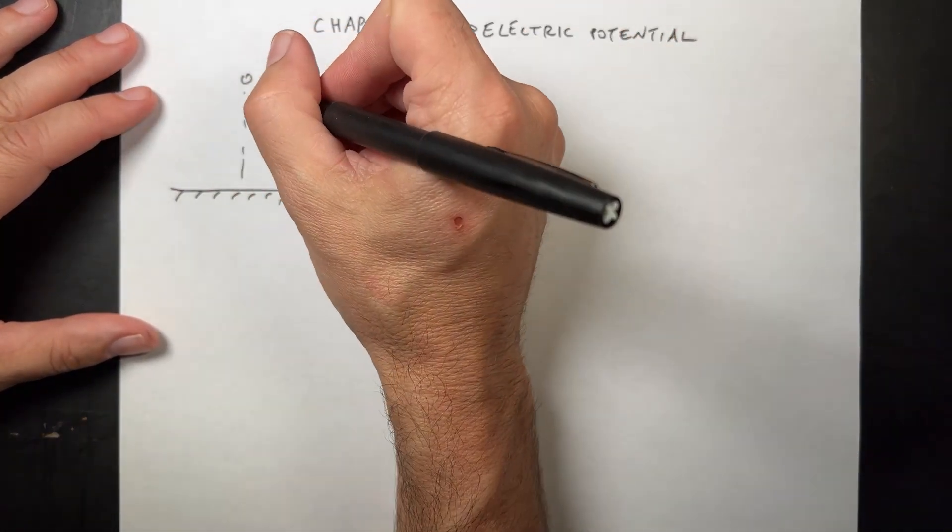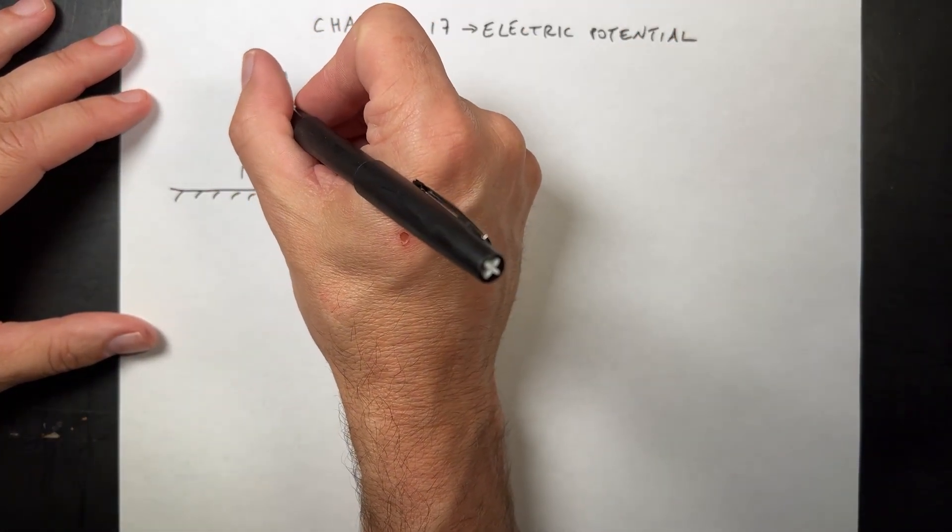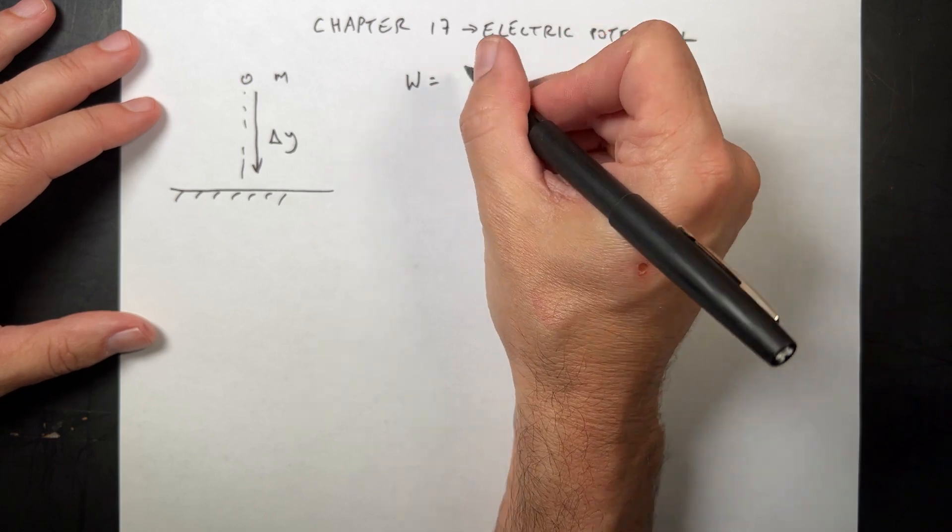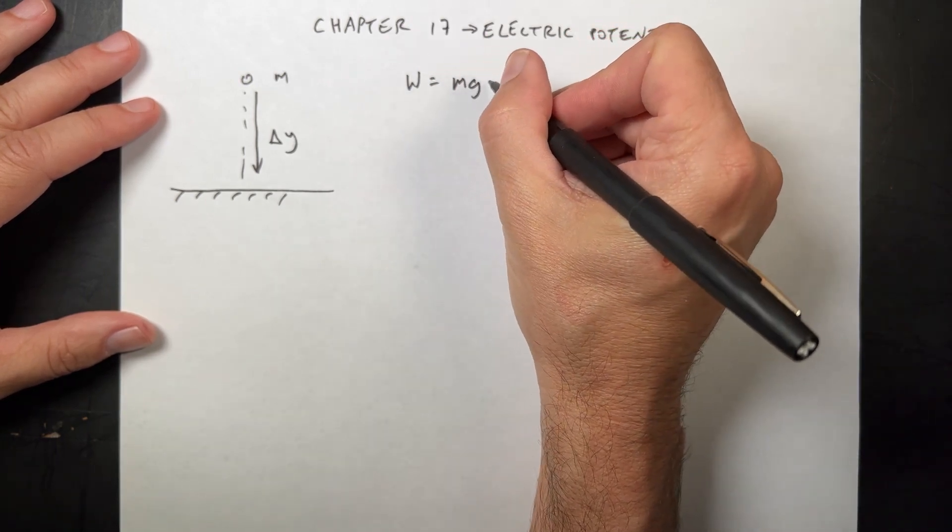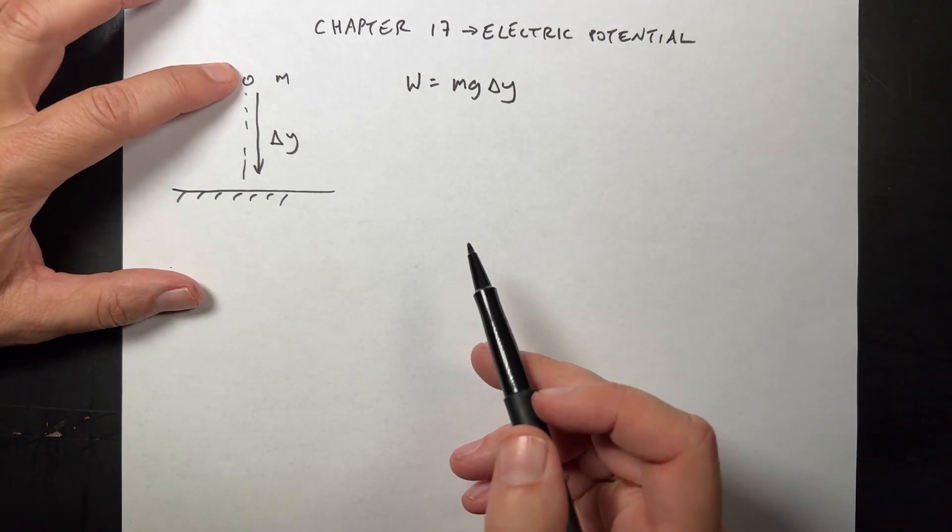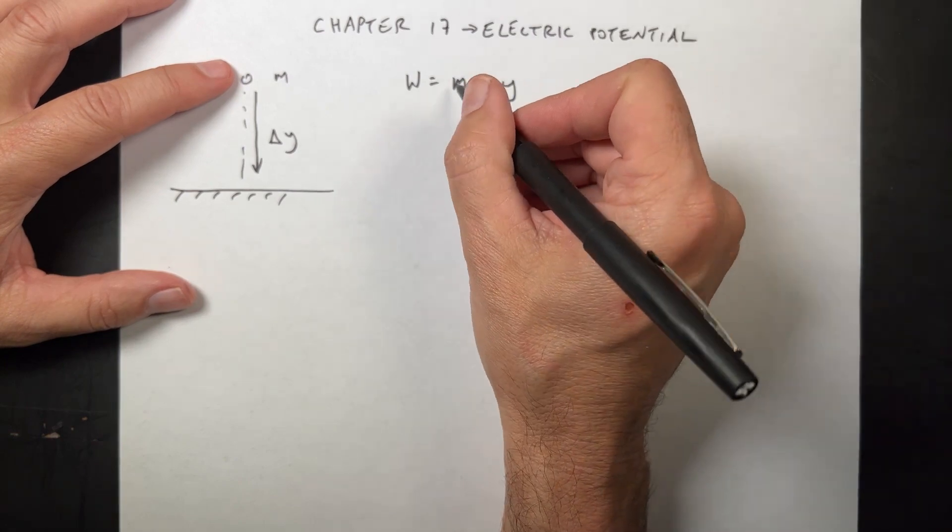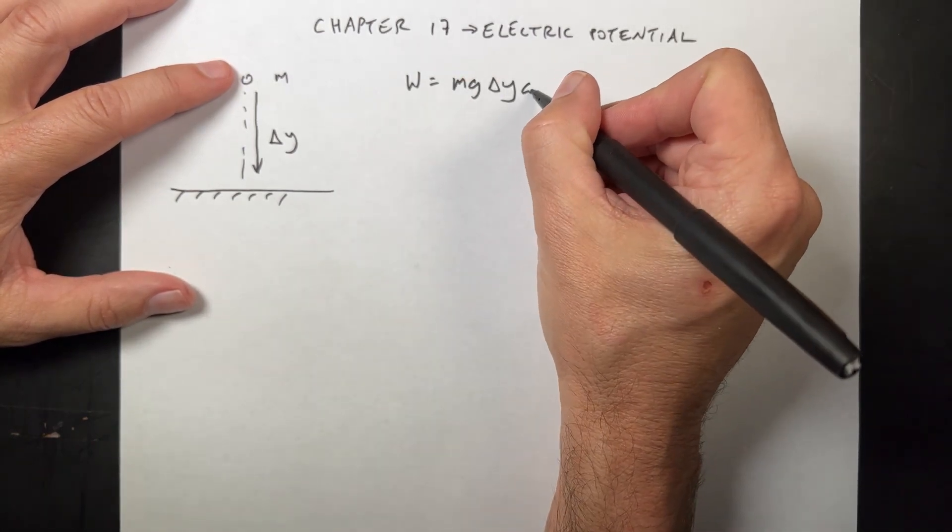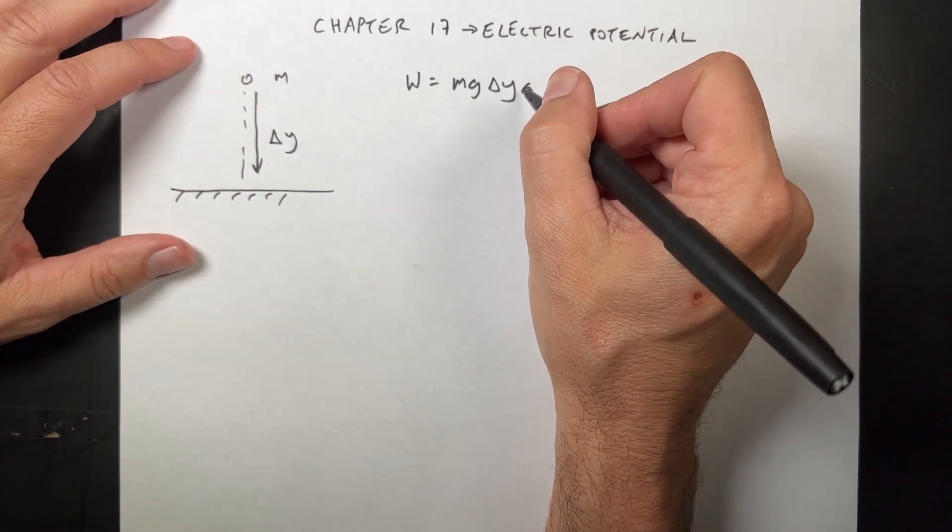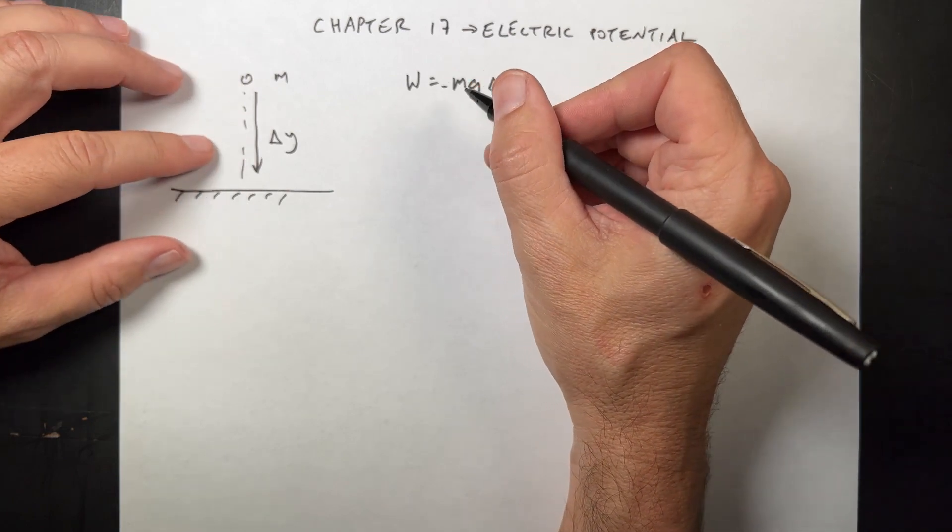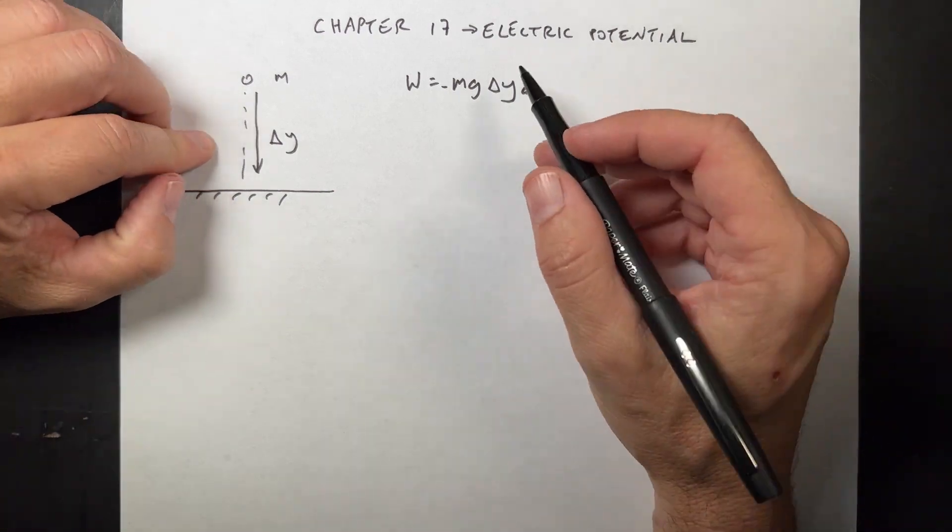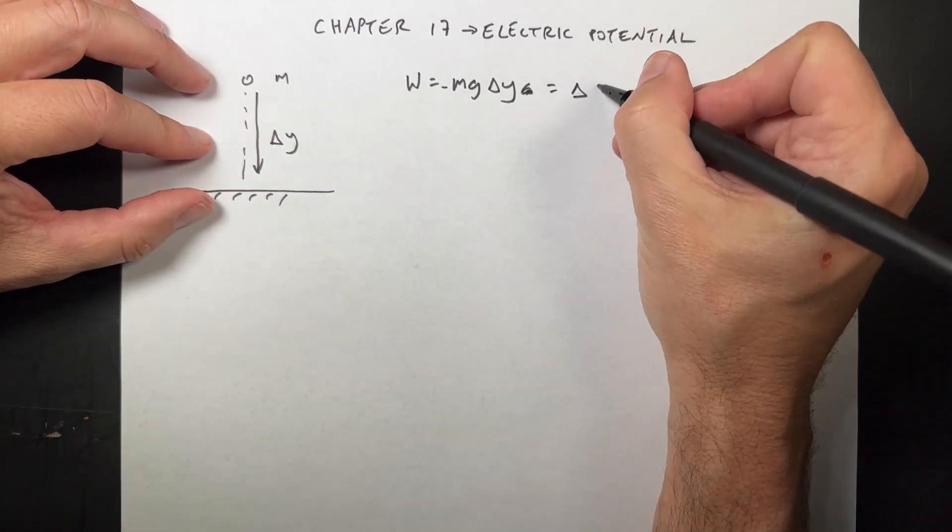But we could also use the work energy principle. So if this moves down a displacement delta y, then we could say work done by gravity is m g delta y. Gravity does, it would actually technically be negative because the gravitational force is down.